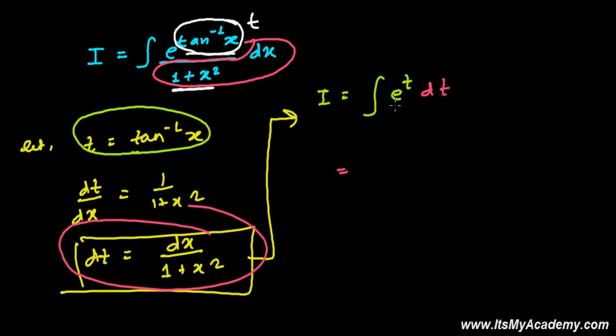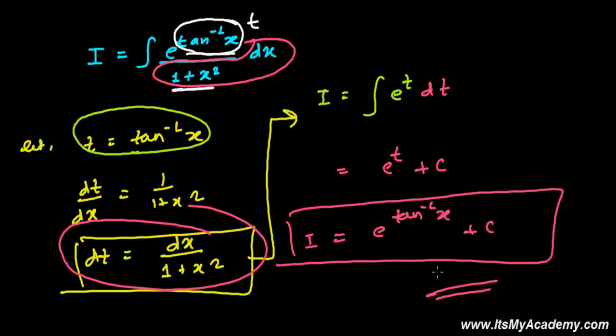And now very simple integration, the integration of e to the power t that is e to the power t itself plus some constant. And now let's put the original value of t that is tan inverse of x. E to the power tan inverse of x plus some constant. And that's our integral. That's our solution.